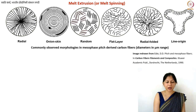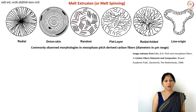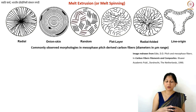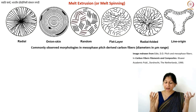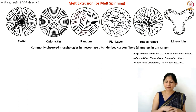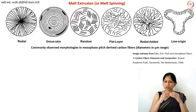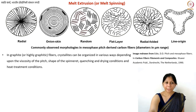The last arrangement — line origin — occurs when the spinneret hole is not perfectly circular. You can also intentionally use different spinneret shapes to achieve higher surface area in the fiber, which helps byproducts anneal out more easily and may suit certain applications. By changing the spinneret shape, you can also make flat ribbon-like fibers. Many possible morphologies exist depending on the spinneret geometry.